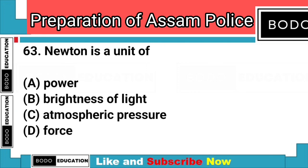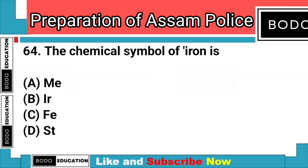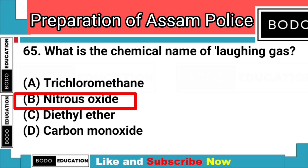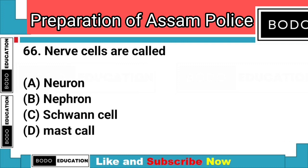Question number 63: Newton is a unit of? Answer: Option D — Force. Question number 64: The chemical symbol of iron is? Answer: Option C — Fe. Question number 65: What is the chemical name of laughing gas? Answer: Option B — Nitrous oxide. Question number 66: Nerve cells are called? Answer: Option A — Neurons.